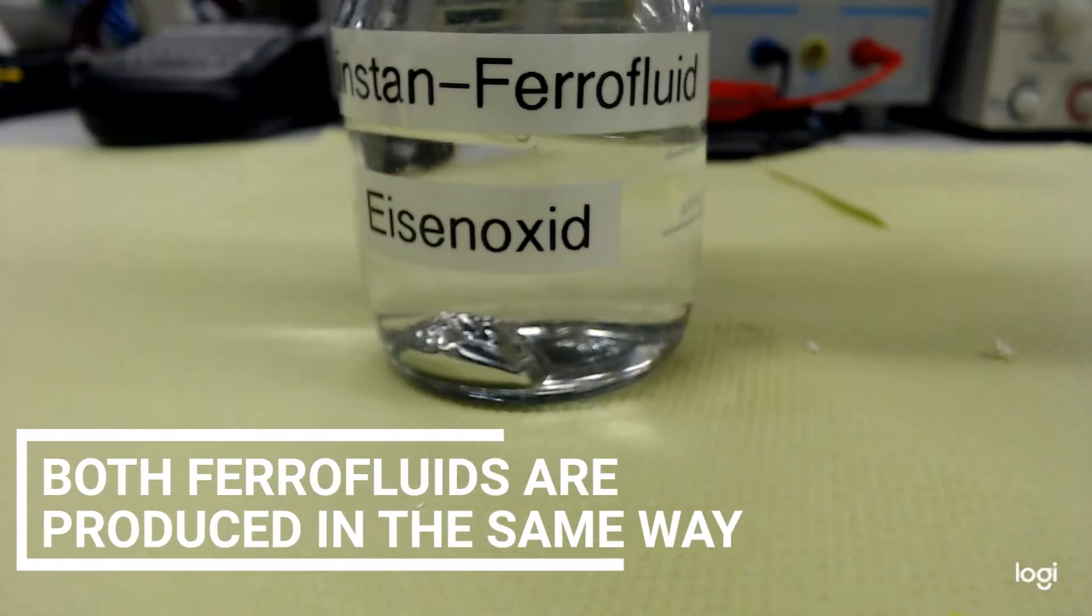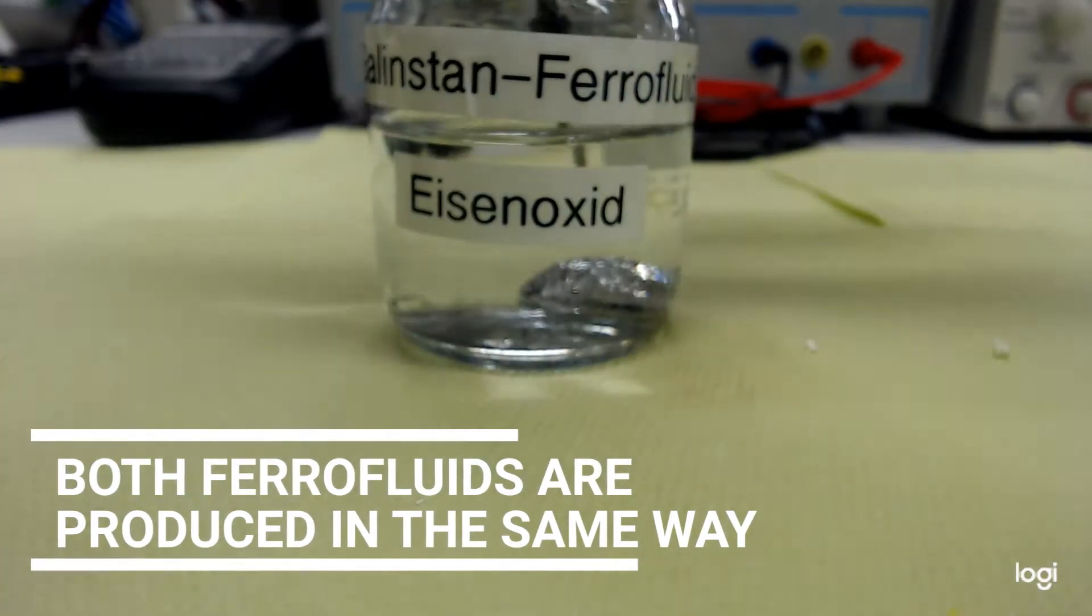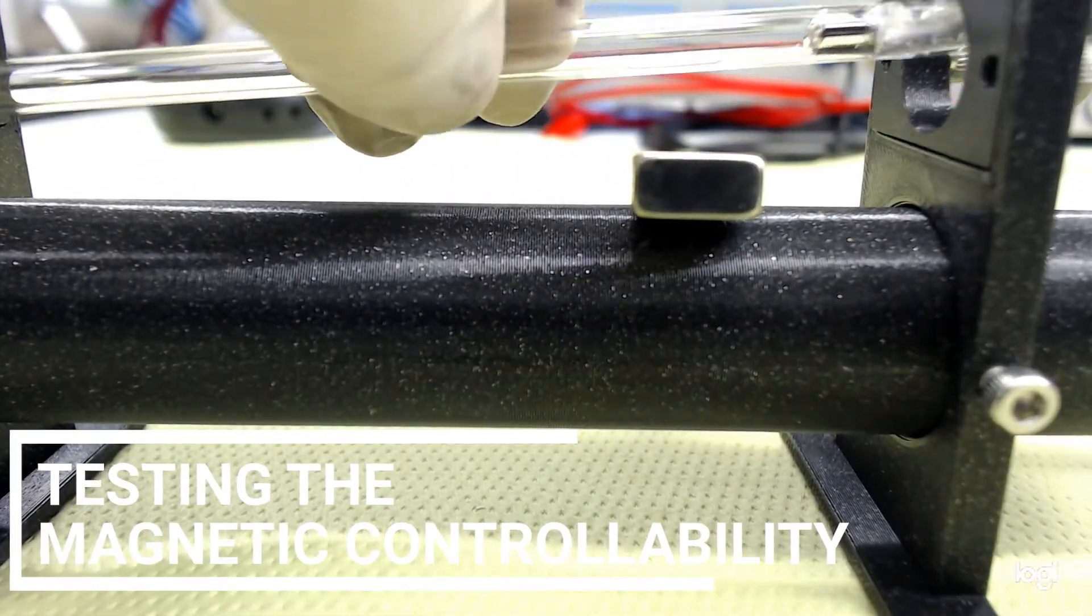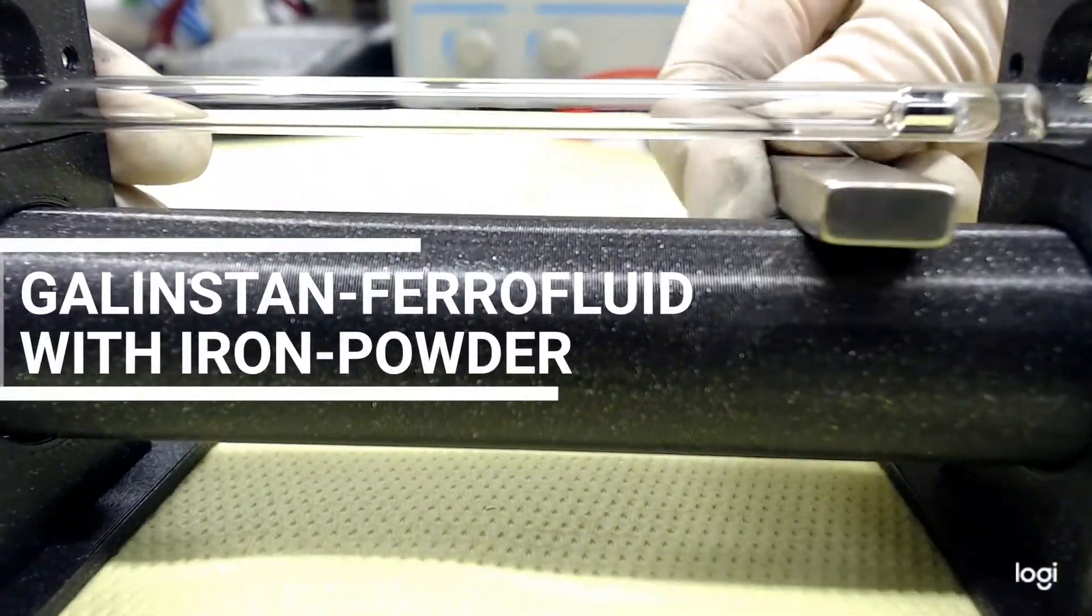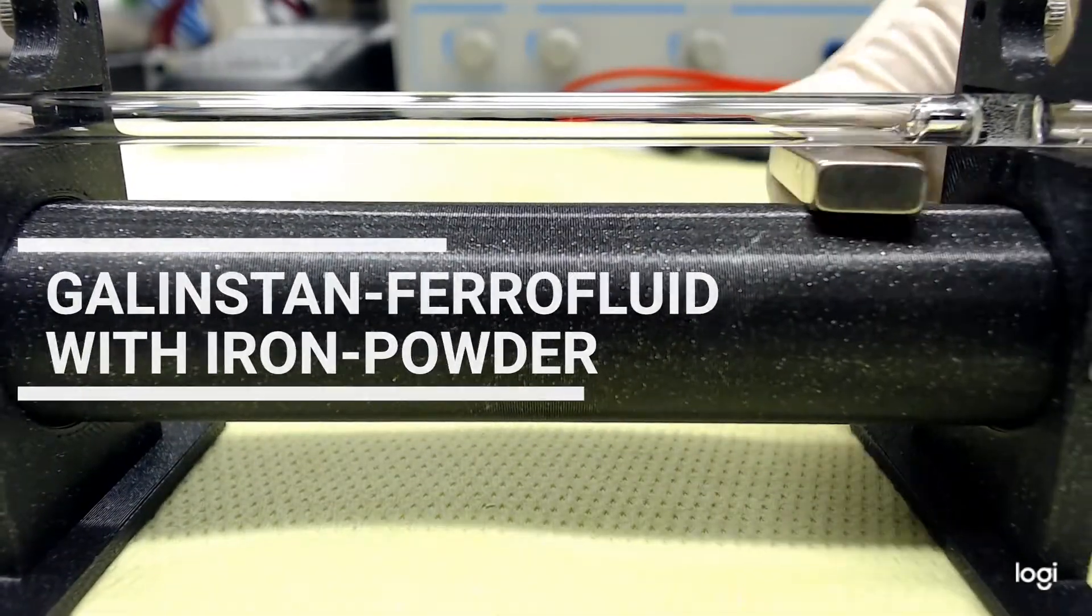Both iron as well as iron oxide dust Galinstan are produced in the same way and can now be tested. But unfortunately, we do not see a response even when applying a strong neodymium magnet to the newly formed material.